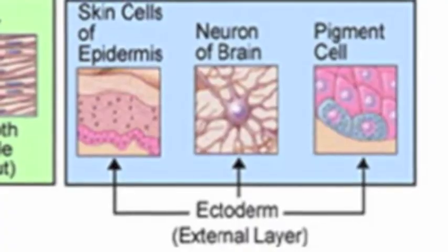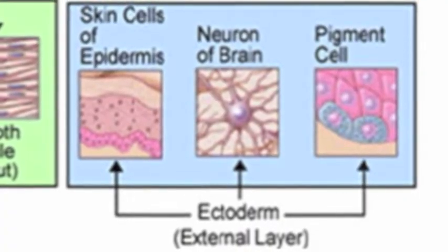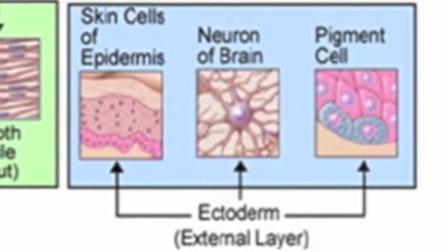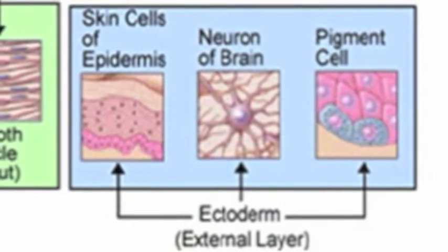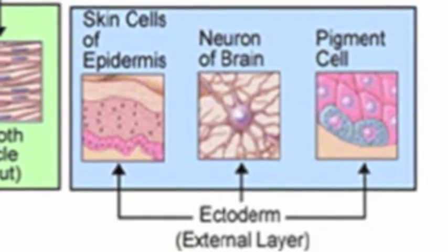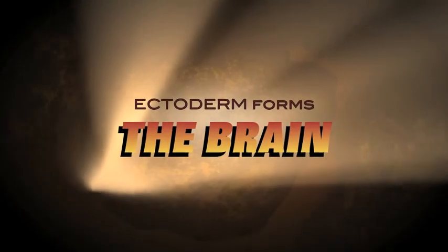Finally, the ectoderm cells move to the outside of the embryo and develop into the central and peripheral nervous systems, along with the epidermis. Ectoderm forms the brain.